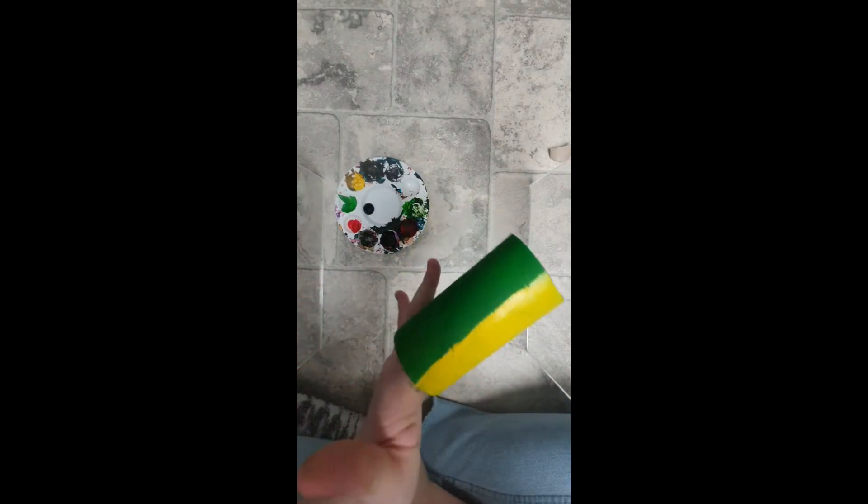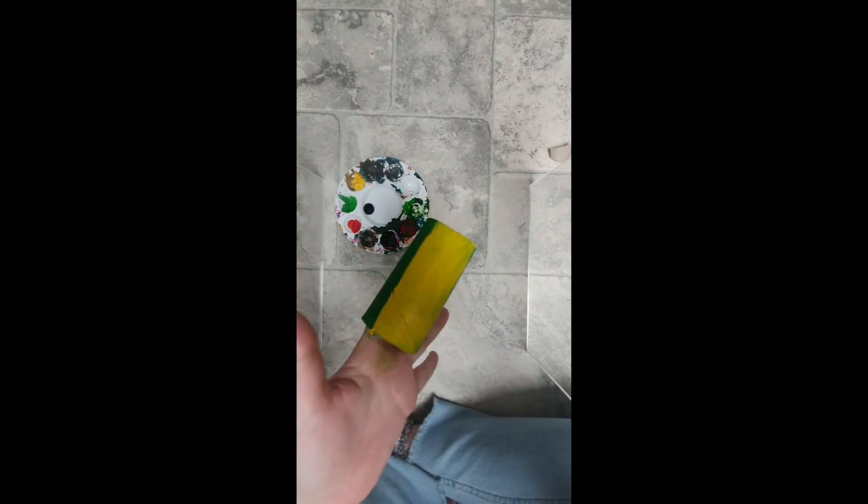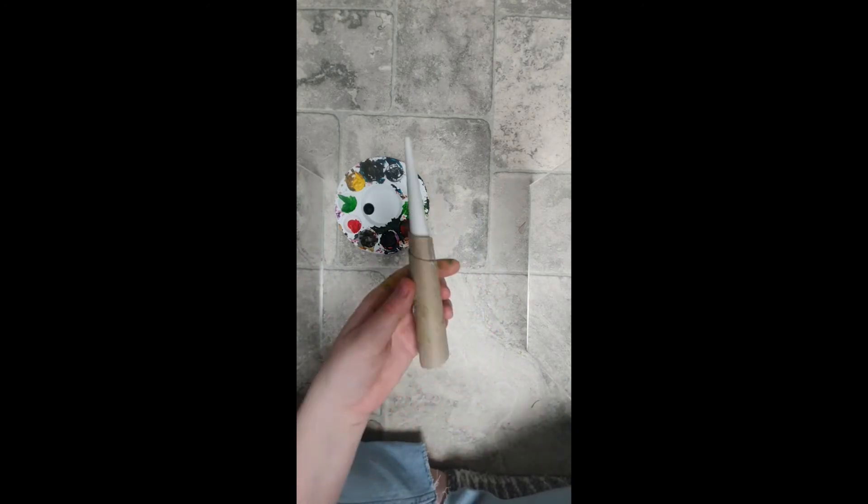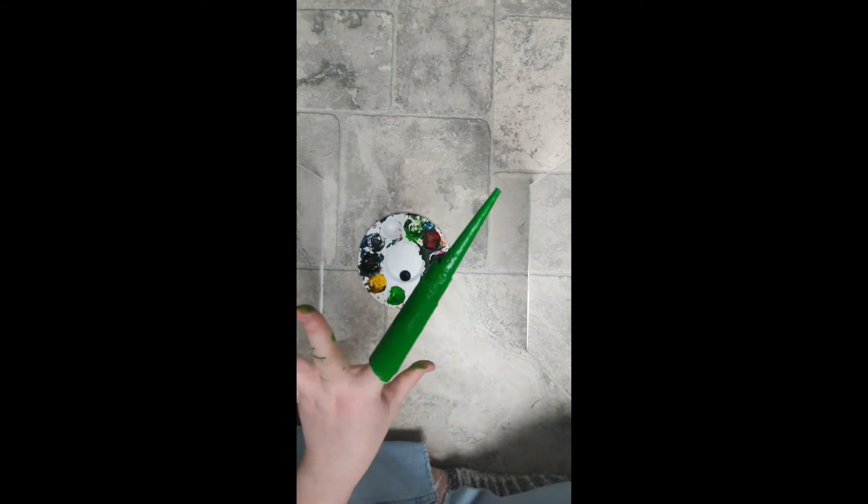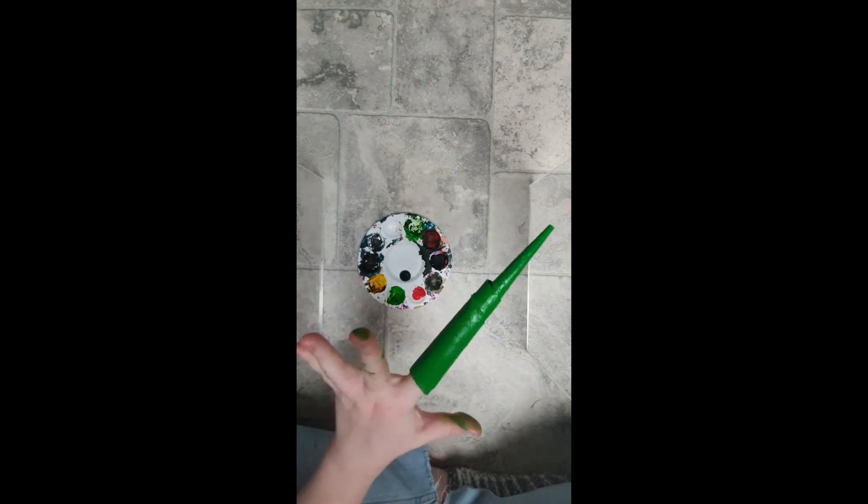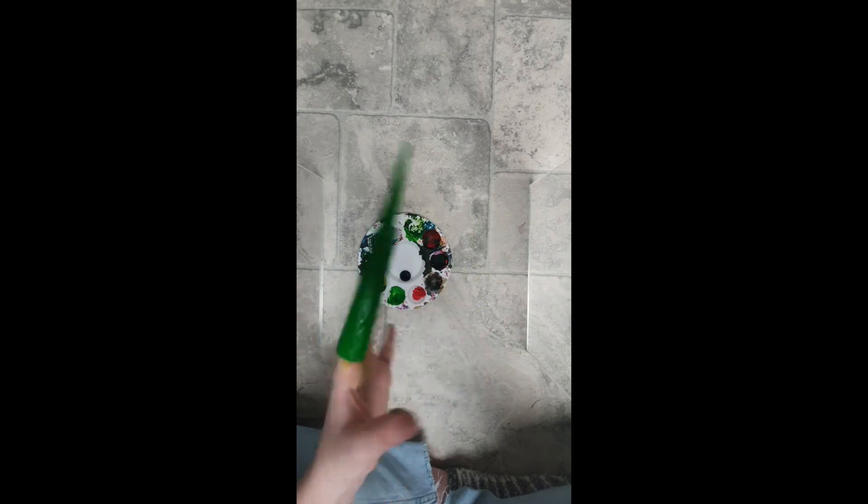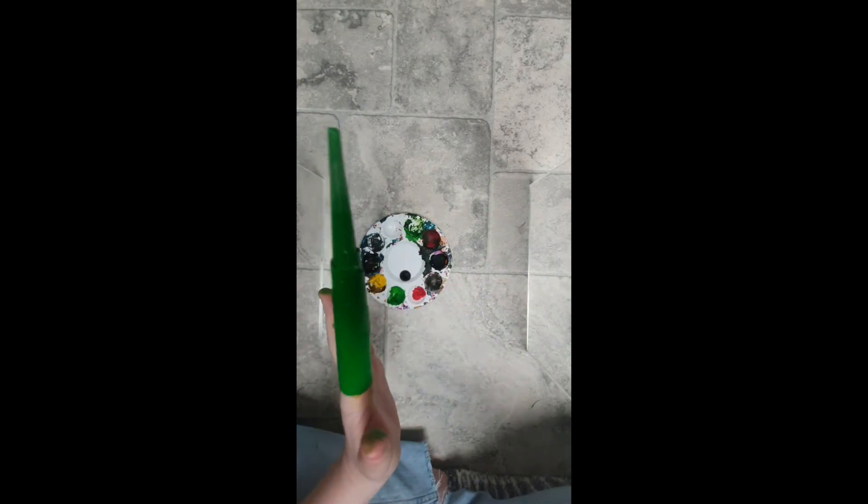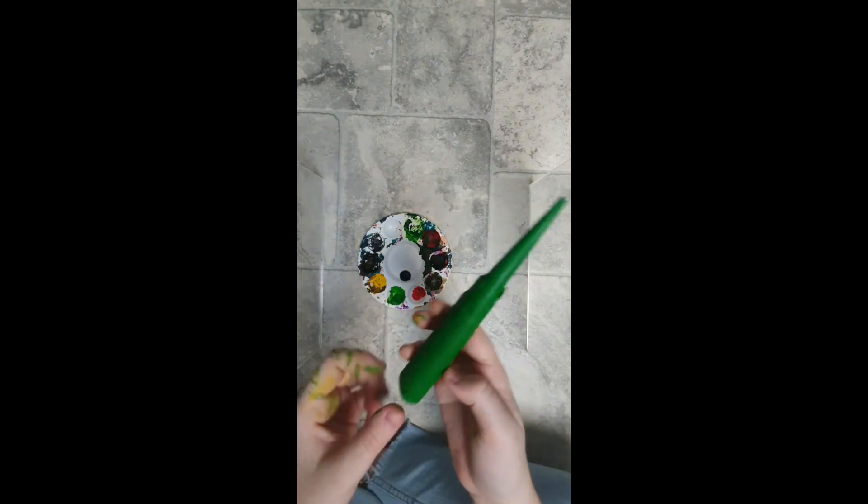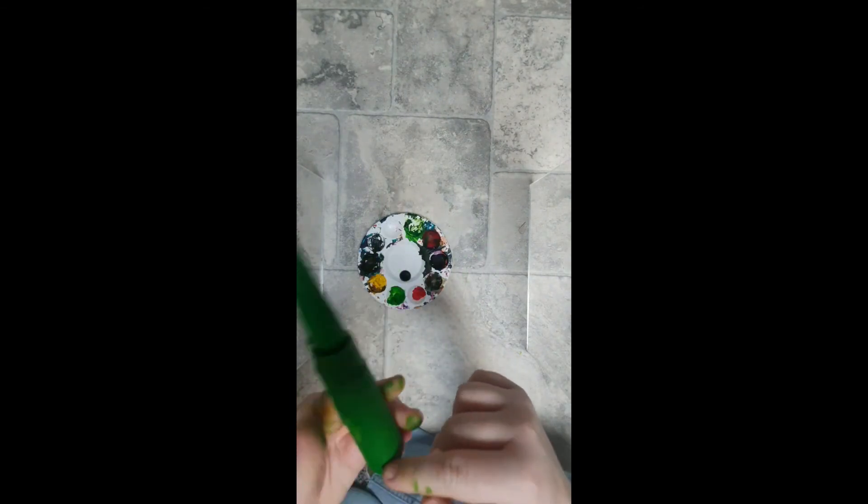So now we have a nice yellow belly for our snake to slither on. Now that our tail is dry, we're gonna paint the whole thing green. There we go, we have a nice green tail. We're gonna wait for that to dry and then come back to it. Okay, now that the paint has dried, we're gonna do a nice yellow belly.